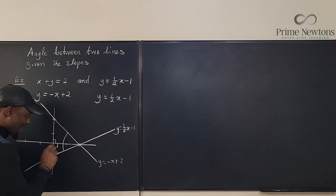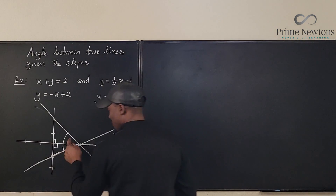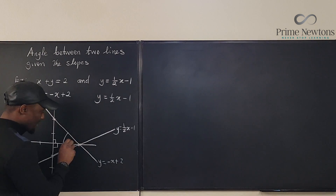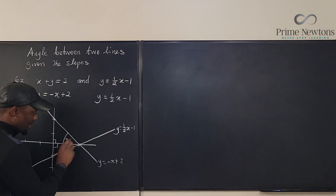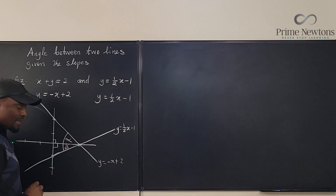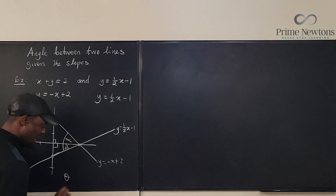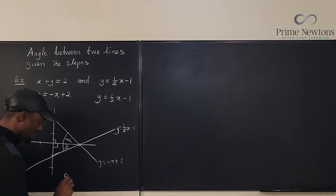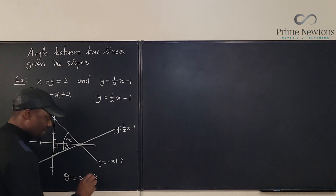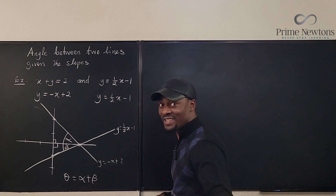We can see that these form right triangles. Let's call the angle that one line makes with the horizontal alpha, and the angle the other line makes with the horizontal beta. The angle we're looking for, theta, is alpha plus beta.